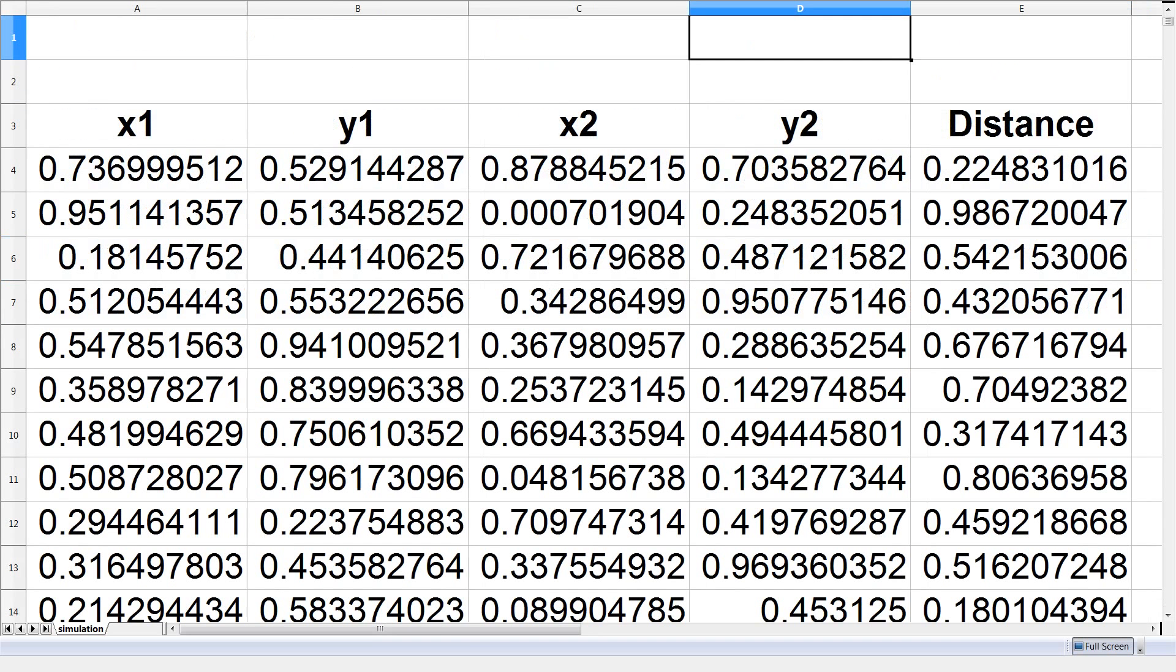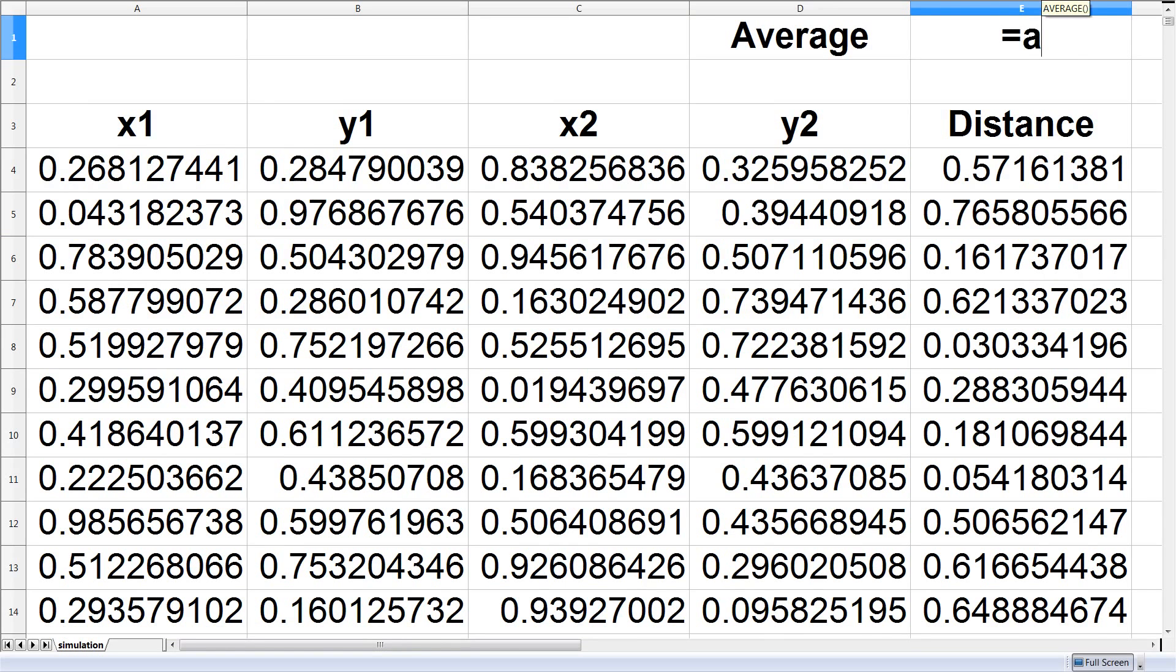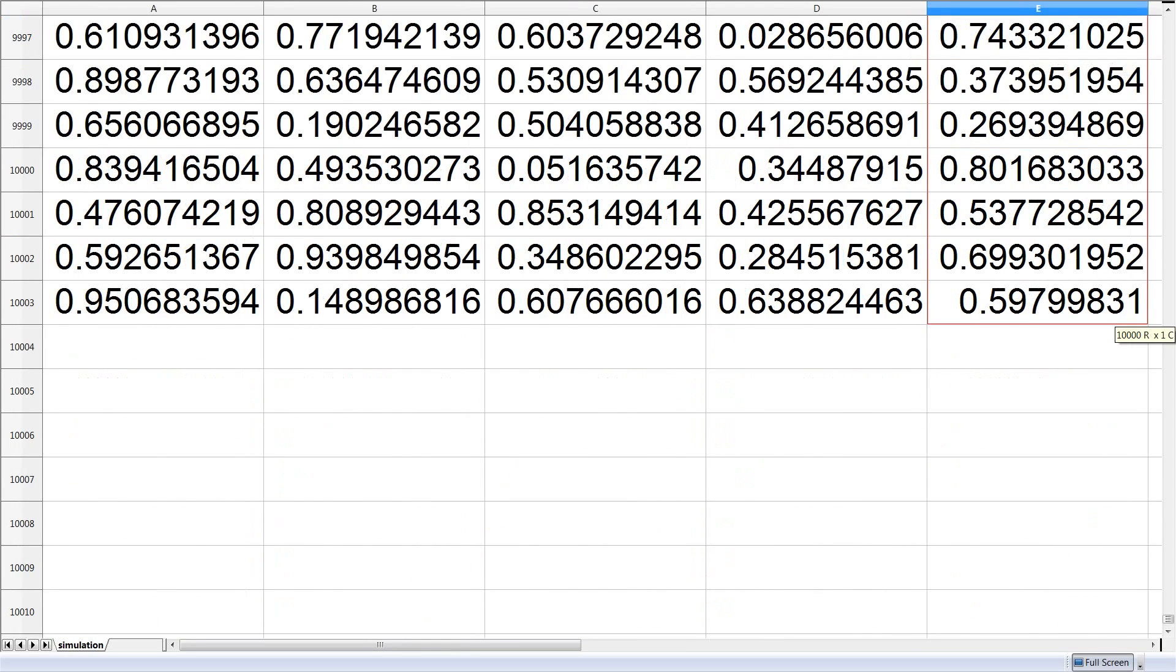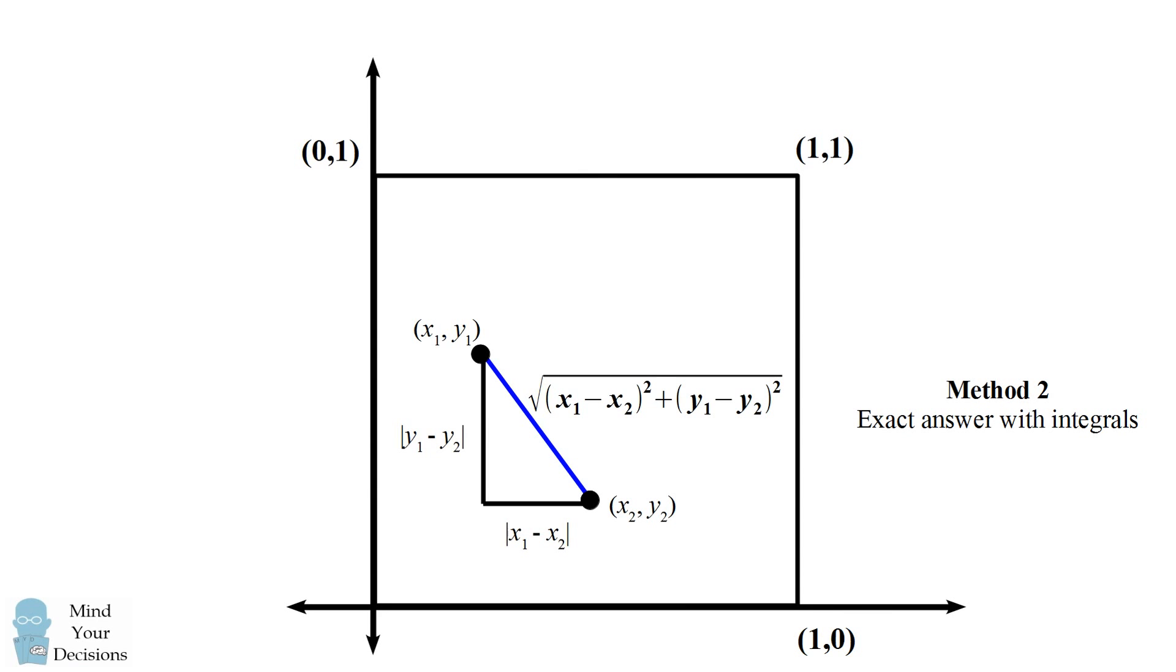And now we can figure out the average by taking the average over all of these trials. So we'll take the average distance over 10,000 trials. And this will give us an estimate of 0.52. We figured out our answer is about 0.52. But what is it exactly? Let's figure out using integrals.